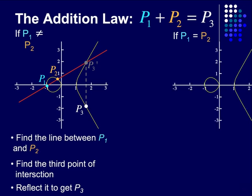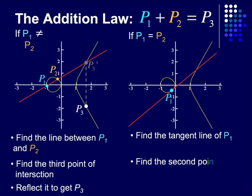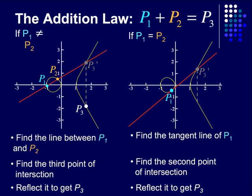The second case is where you are adding a point to itself. First, we need to find the tangent line of point one, then find the second point of intersection, and reflect it to get point three.